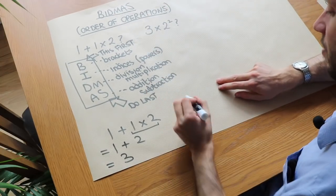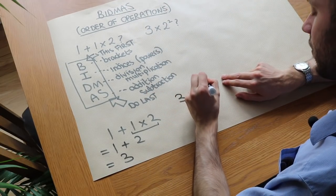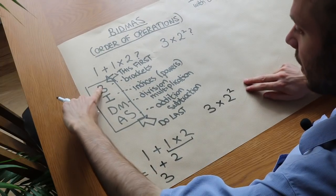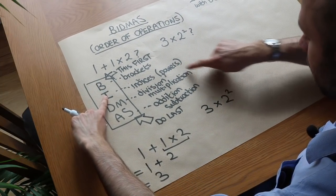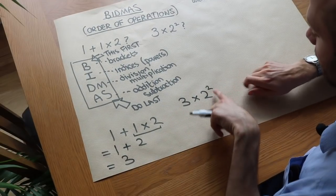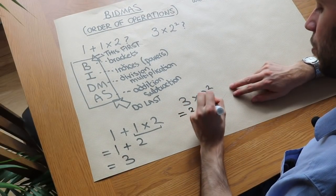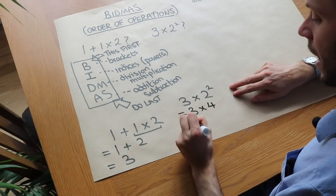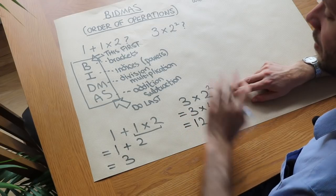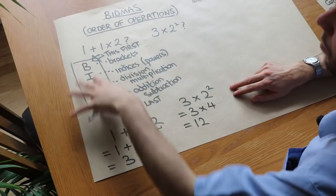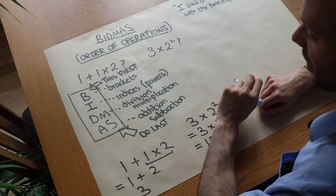What about 3 times 2 squared? We go down BIDMAS — there are no brackets, but there is a power. So we do the power first: 2 squared is 4. So that's 3 times 4, and 3 times 4 is 12. So this removes any ambiguity from how we interpret mathematical expressions.